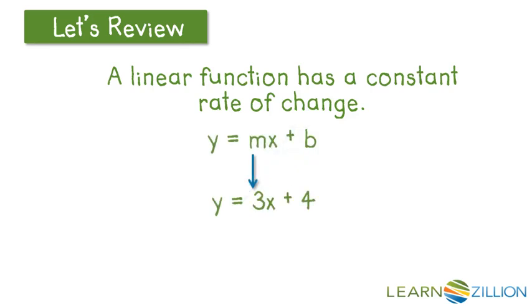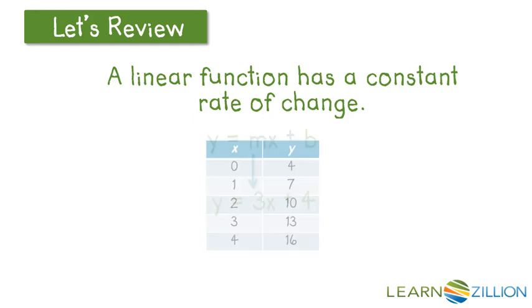Here we can see that in the equation, 3 is the coefficient of our independent variable x. And in a table, every time x changes by 1, y changes by 3. So the change in y divided by the change in x is 3 divided by 1, which is 3.